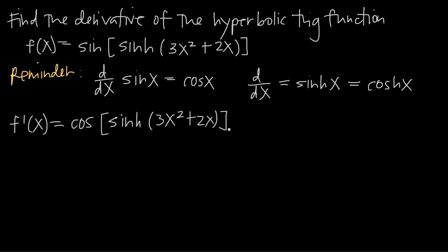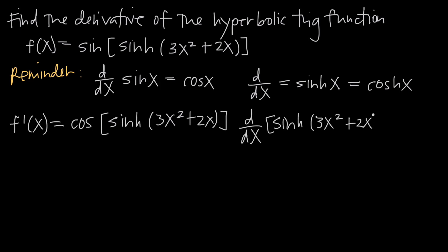Chain rule tells us we have to multiply by the derivative of the inside function. The inside function that we ignored is hyperbolic sine of 3x squared plus 2x, so we want to multiply by the derivative of hyperbolic sine of 3x squared plus 2x — so we have to find that derivative.